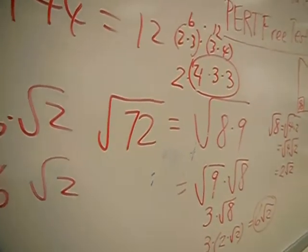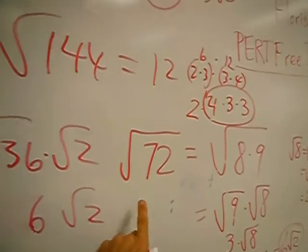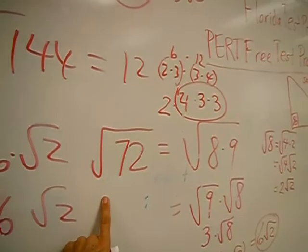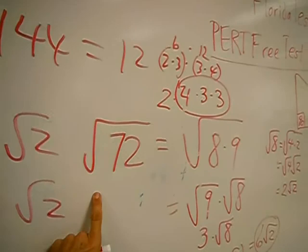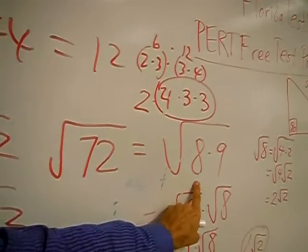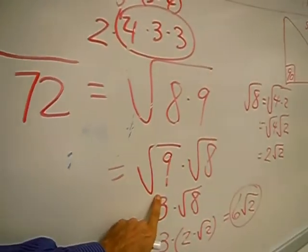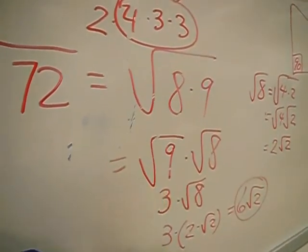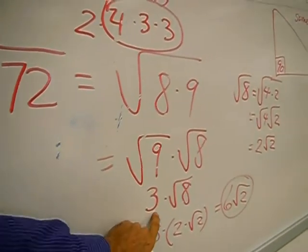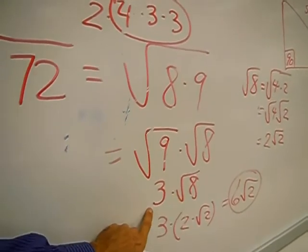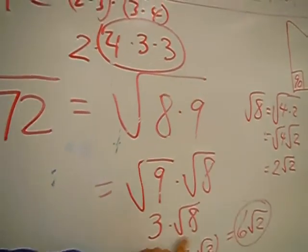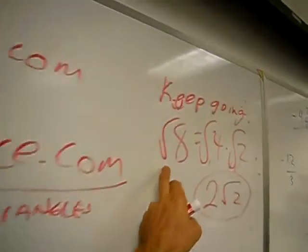We like to be flexible. When we see 72, we also see 8 times 9. We see 9 times 8. We see 3 times 8. But that root 8 isn't enough.